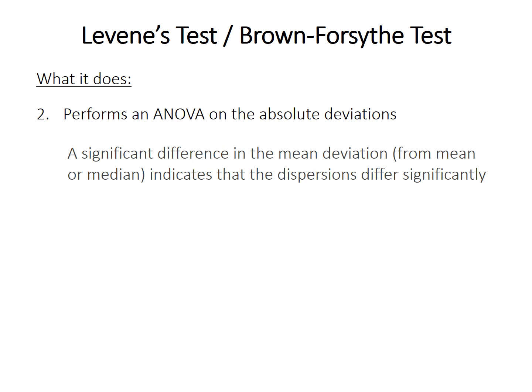After converting each point from the raw value to the absolute deviation, the method then performs an ANOVA on those absolute deviations. If one sample, or more than one sample, has larger absolute deviations than the others, you're likely to get a significant ANOVA result, and that is indicative of significantly different dispersion.